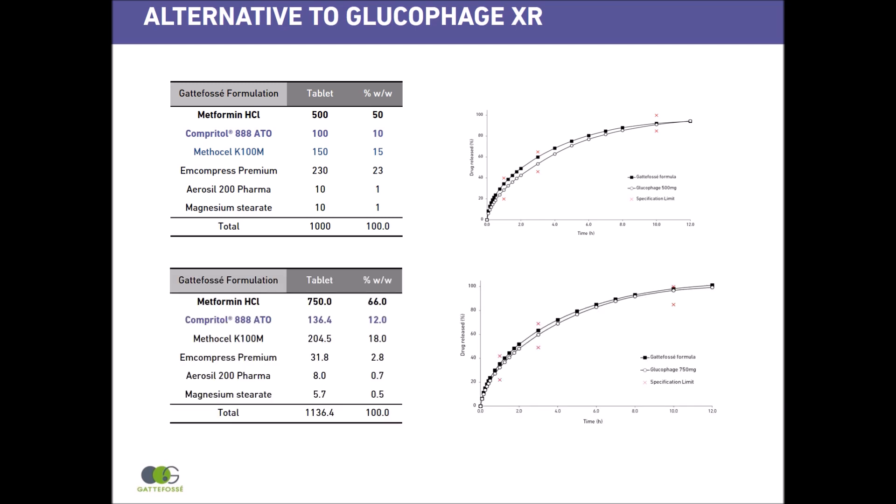Another formulation containing a higher dose of 750 mg was also developed. As you can see, the only difference was the adaptation of the amounts of Compritol 888 ATO and Methocel K100M — we had to increase slightly the amount of these sustained-release agents.